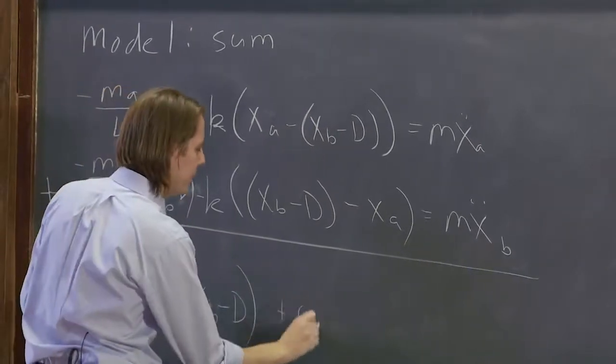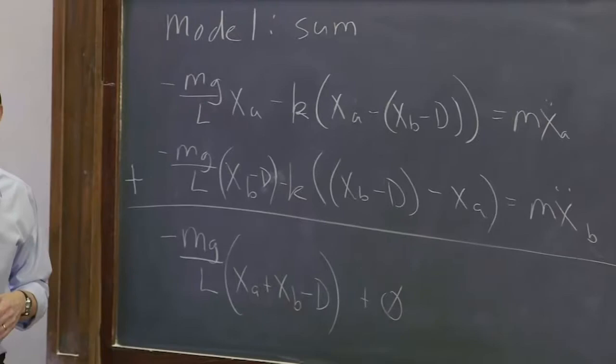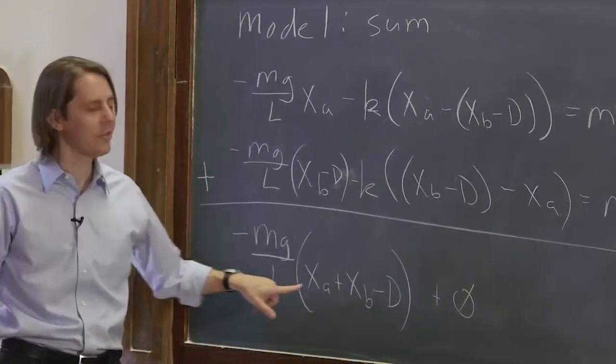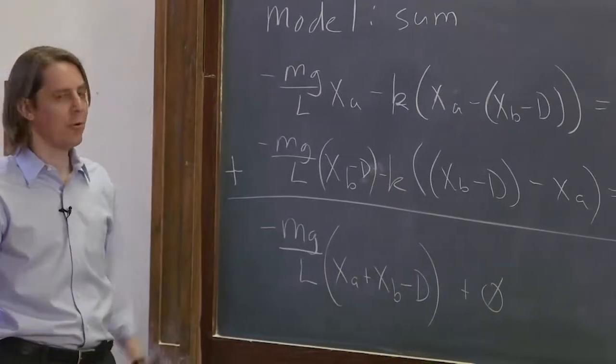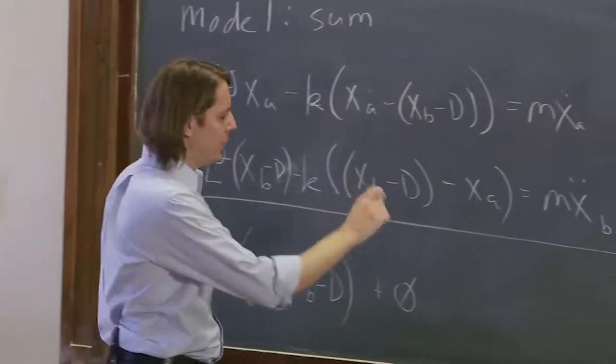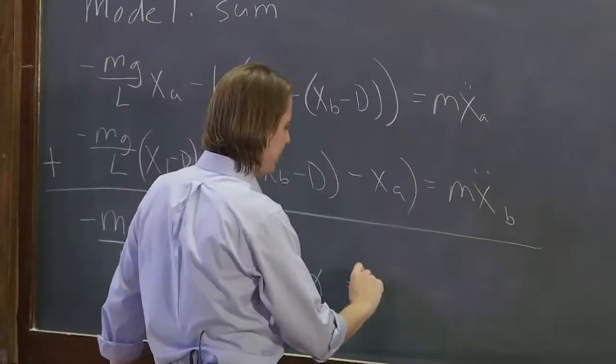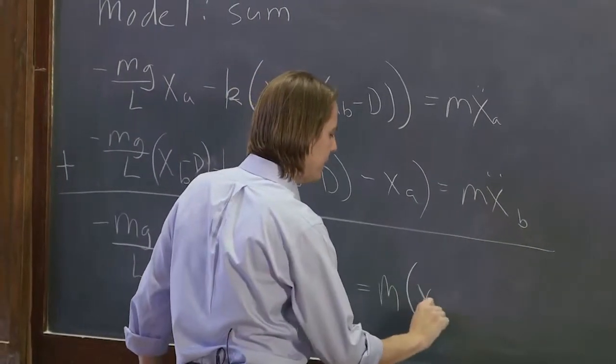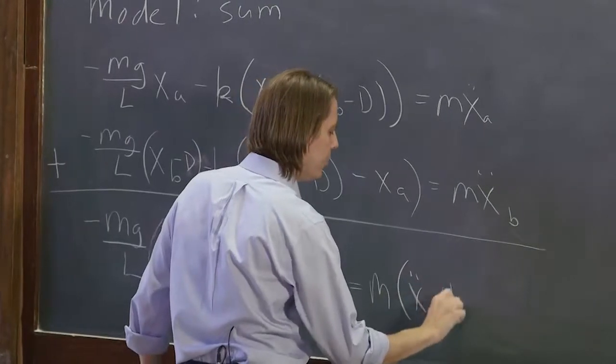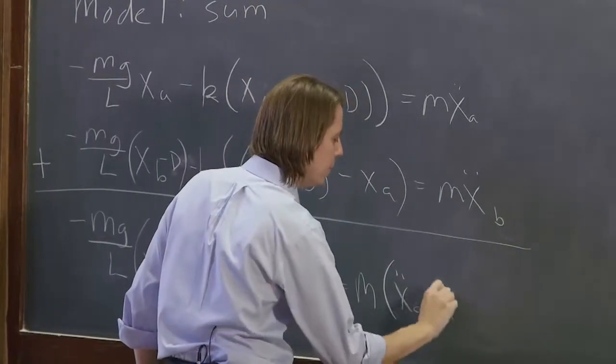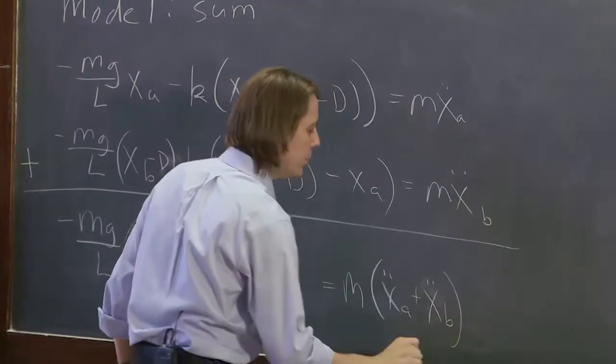So when you do the plus terms, that part goes away. It's still coupled. It still has xA and xB in it. It's just the spring part went away. And then those equal, if we sum it, the mass times xA double dot plus xB double dot.